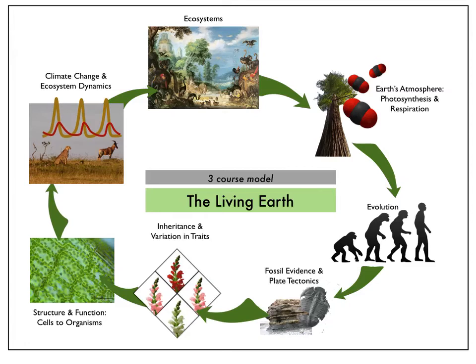In the three-course model, the high school Living Earth course example explores the relationship between living and non-living components of the Earth system. The course goes in a cycle, starting at the biggest scale interactions, zooming into some of the smaller scale processes, and then zooming back out again.